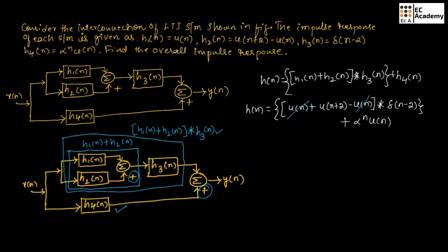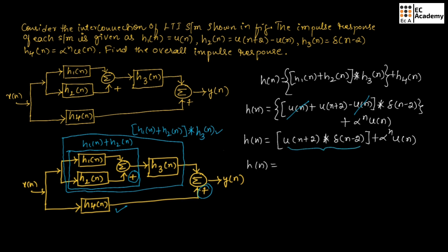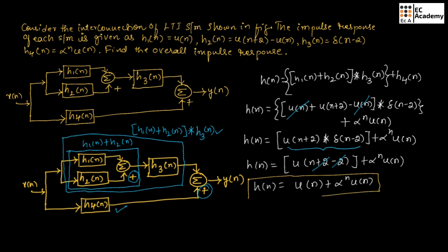We can cancel out the U of n terms. Therefore, we can write H of n is equal to U of n plus 2, convoluted with delta of n minus 2, plus alpha to the power of n times U of n. This simplifies to U of n plus 2 minus 2, plus alpha to the power of n times U of n. Canceling again, we finally get H of n is equal to U of n plus alpha to the power of n times U of n. This is the overall impulse response of the given system.